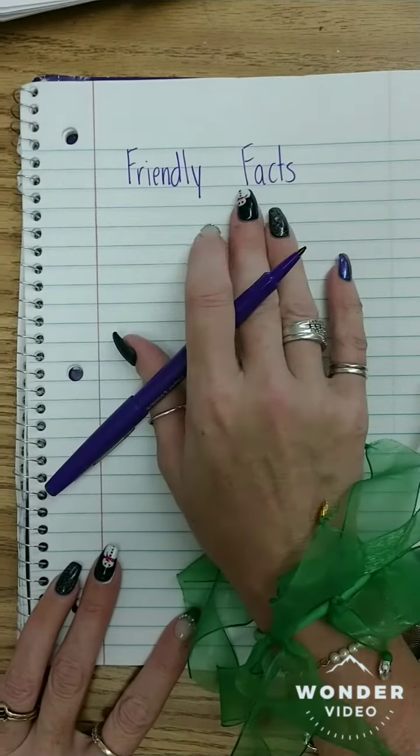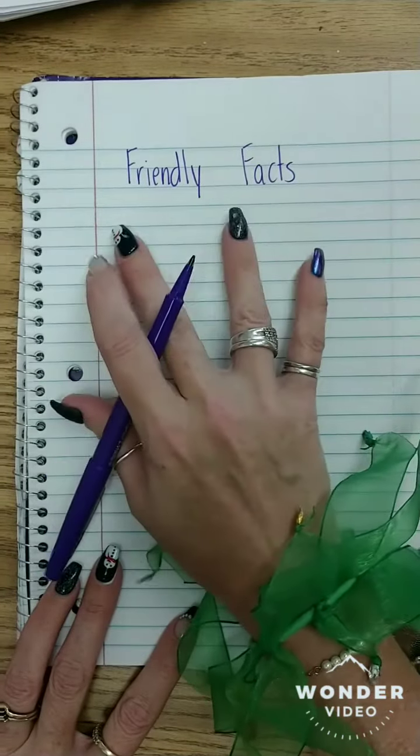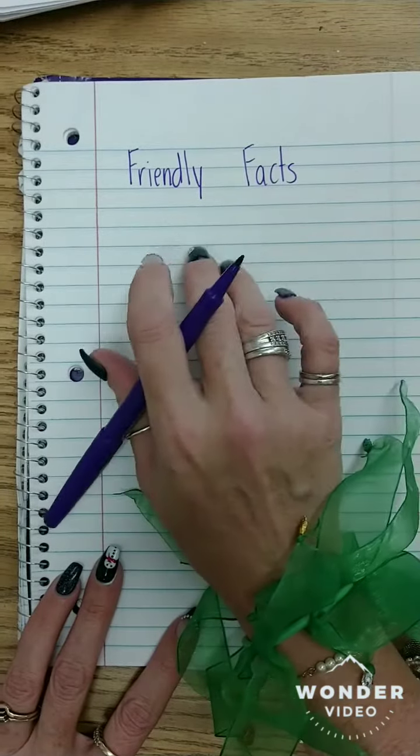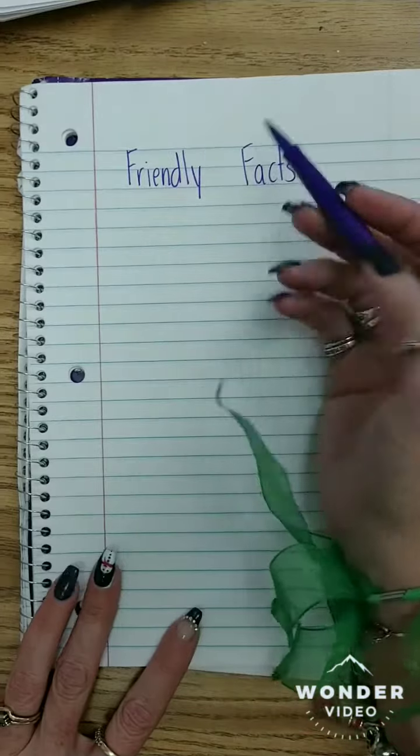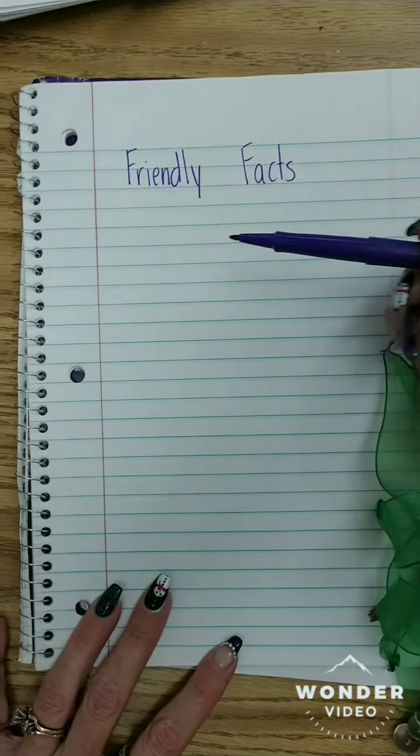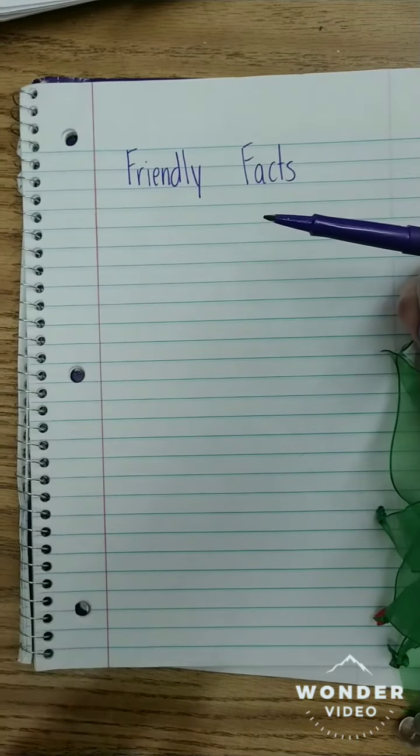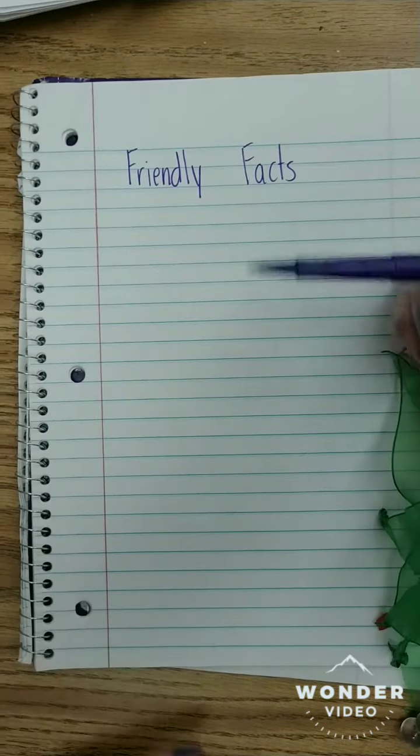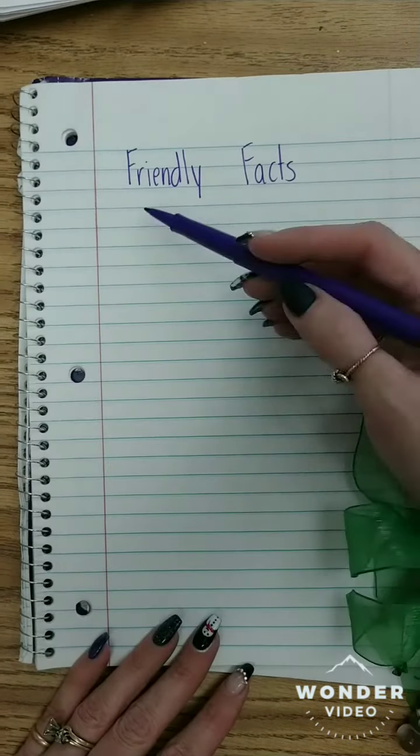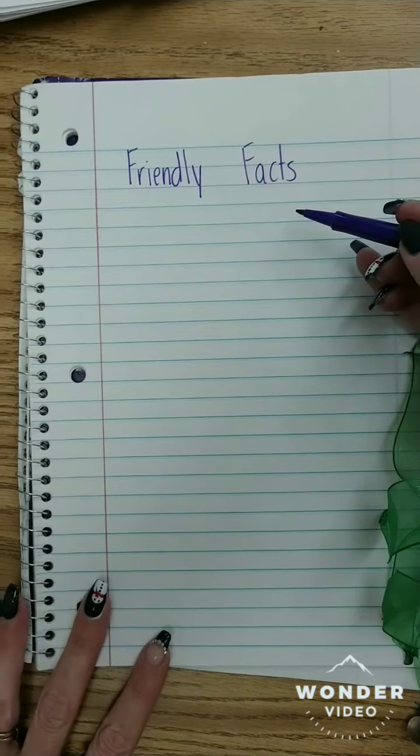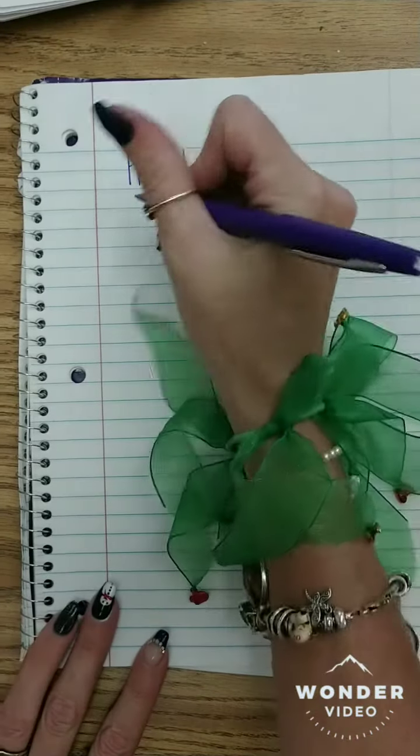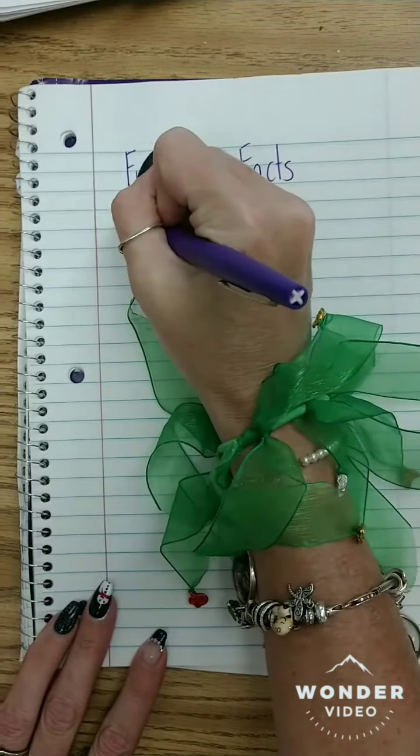The first thing we had to do is we had to define friendly facts. We've had friendly numbers before, and as the kids can tell you, friendly numbers are numbers that we break apart a bigger number where they're easy to compute. Well, friendly facts are multiplication facts that we know really easily.